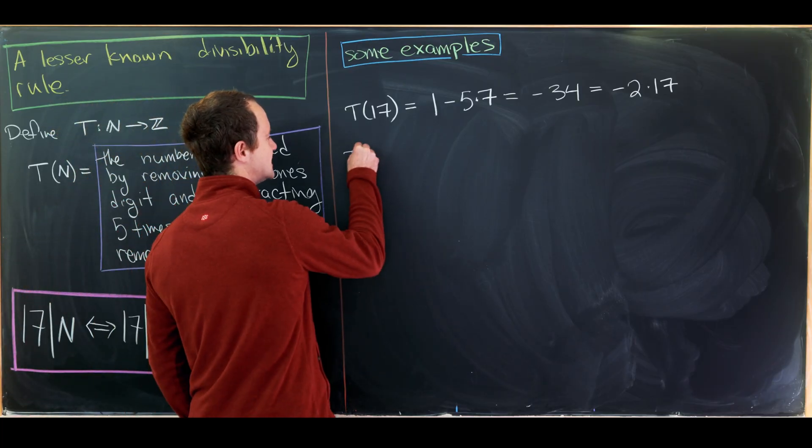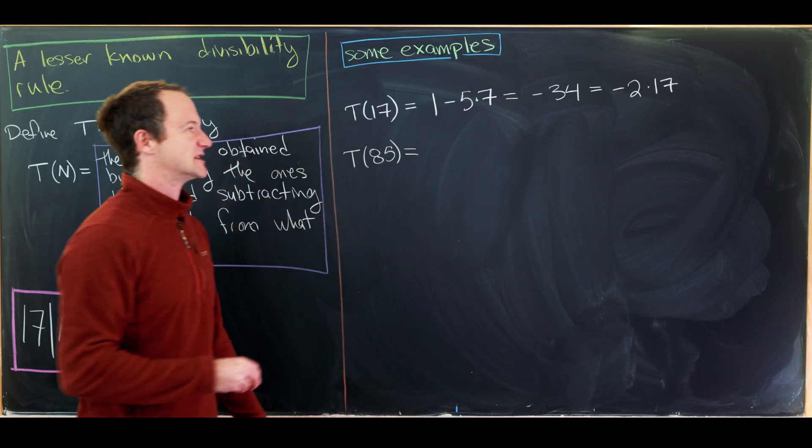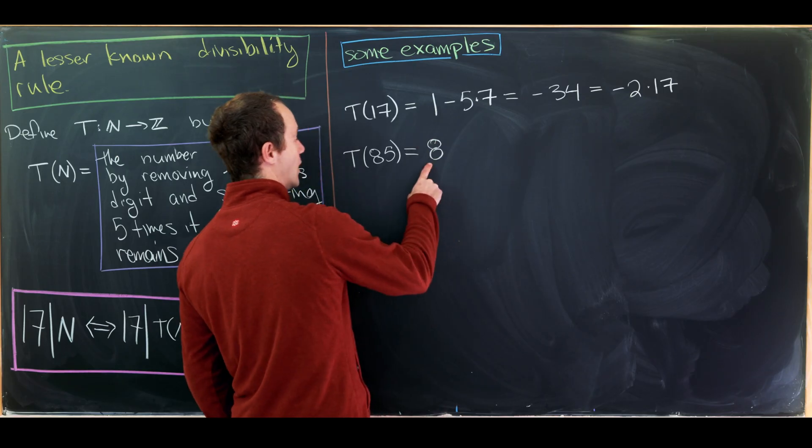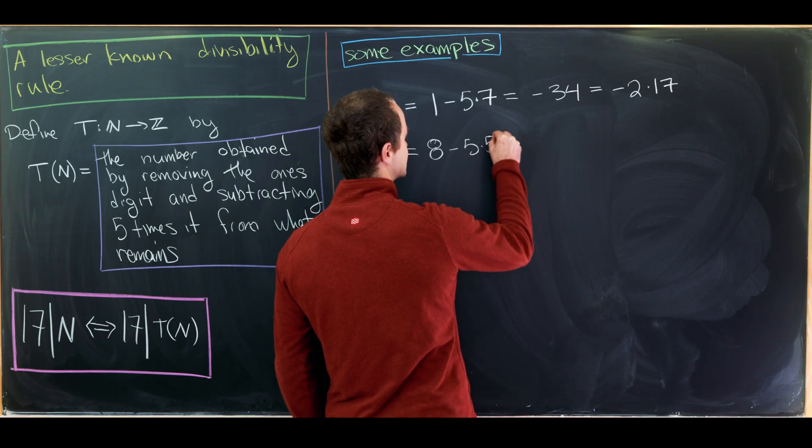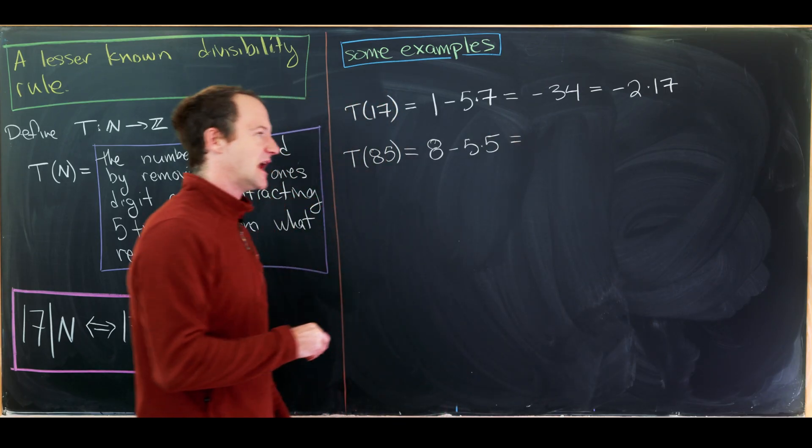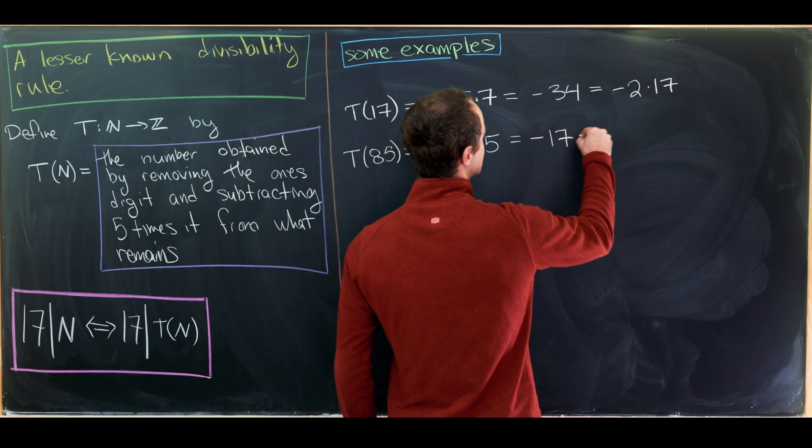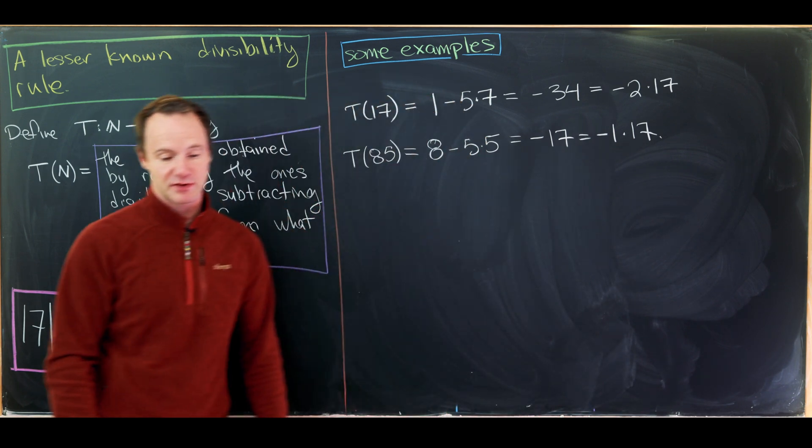So let's maybe do T(85). So notice that's equal to 17 times 5. So we'll remove that ones digit, which is 5, leaving us with 8 minus 5 times 5. That gives us 8 minus 25, which is negative 17. So that's equal to negative 1 times 17, still a multiple of 17.